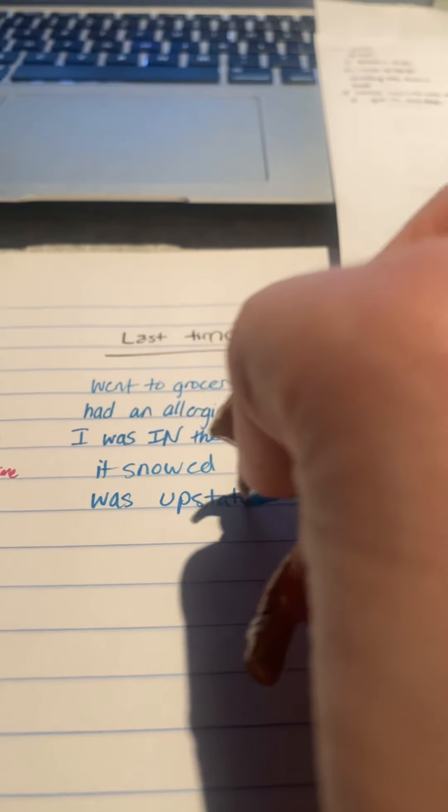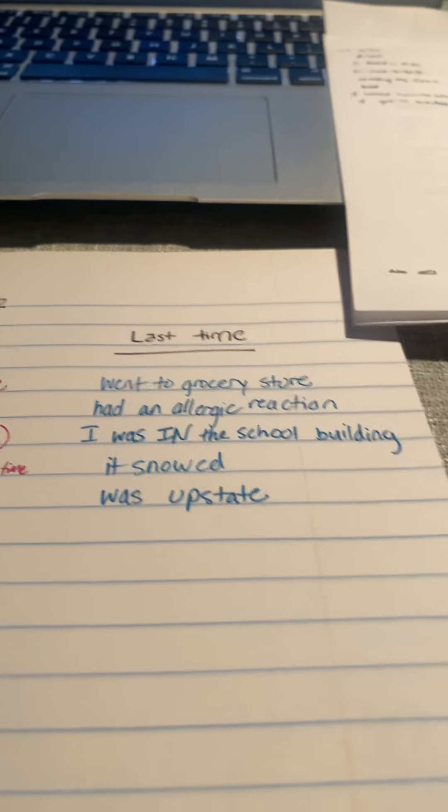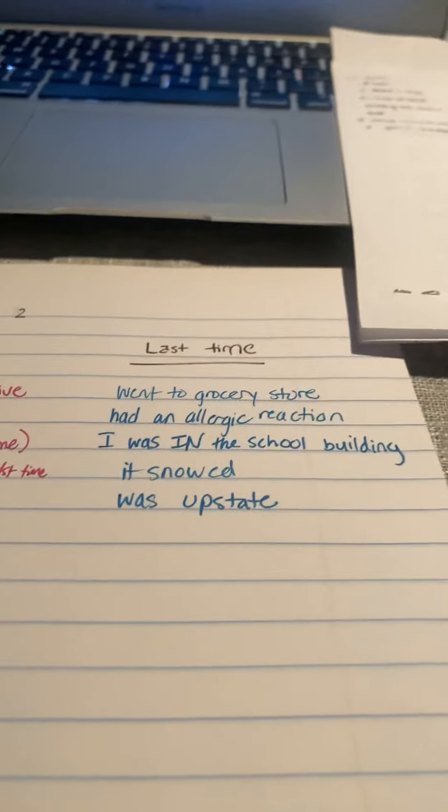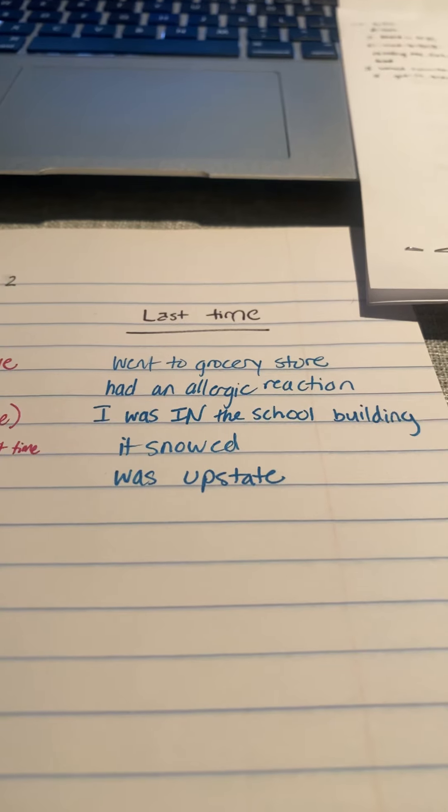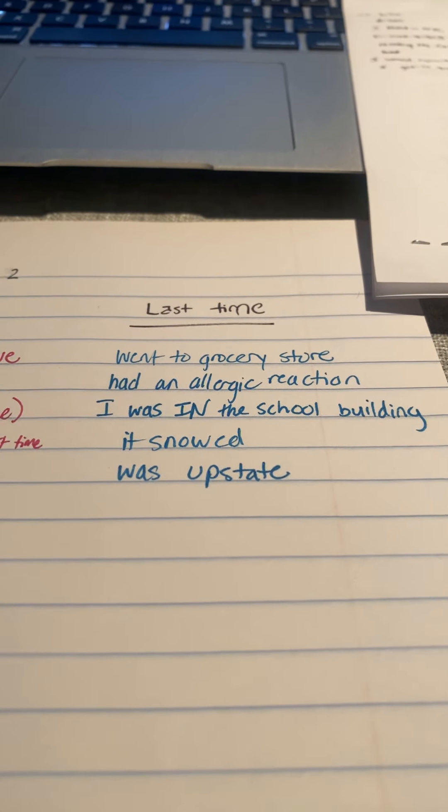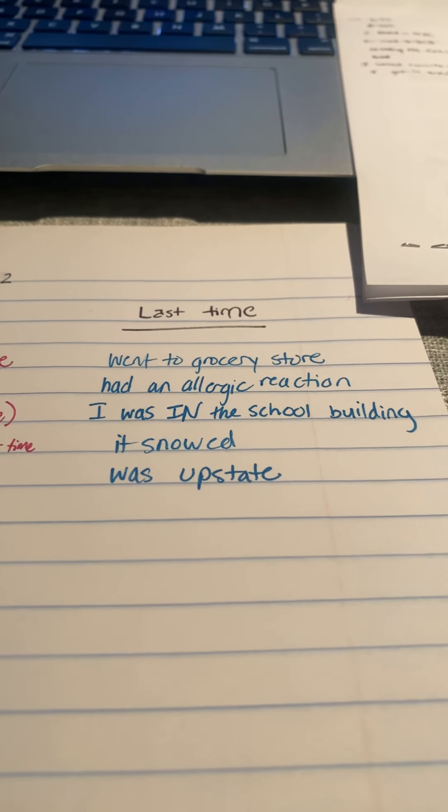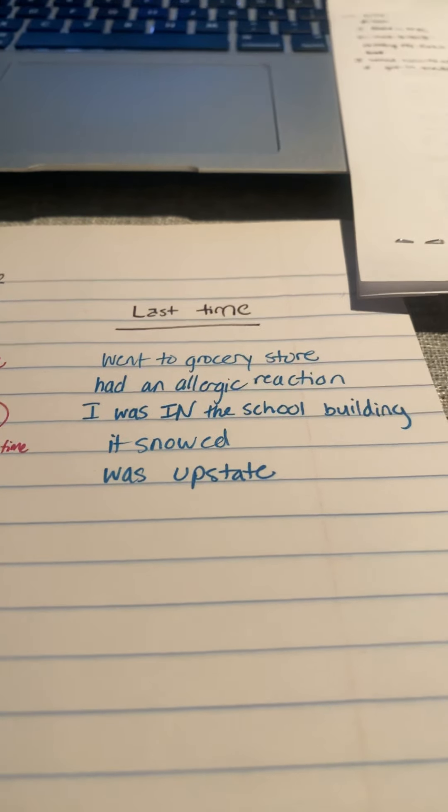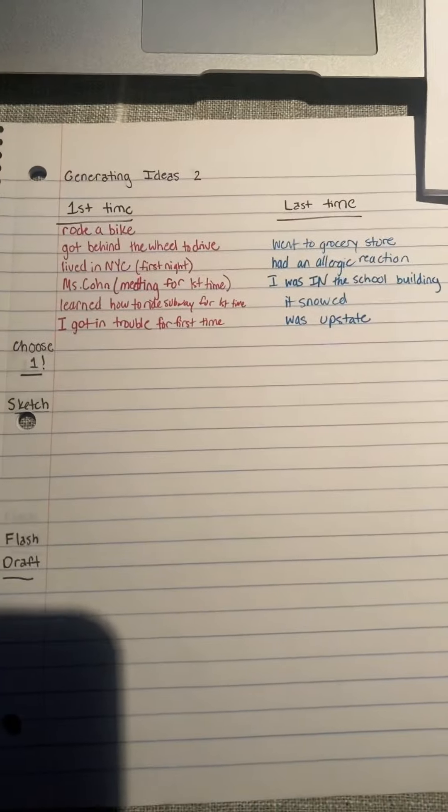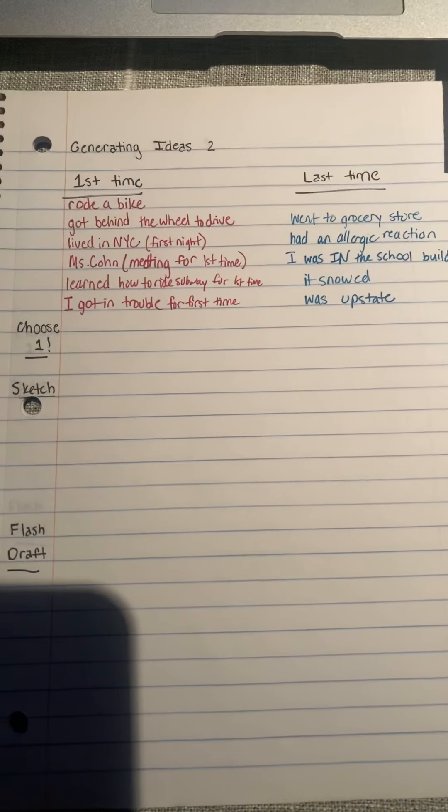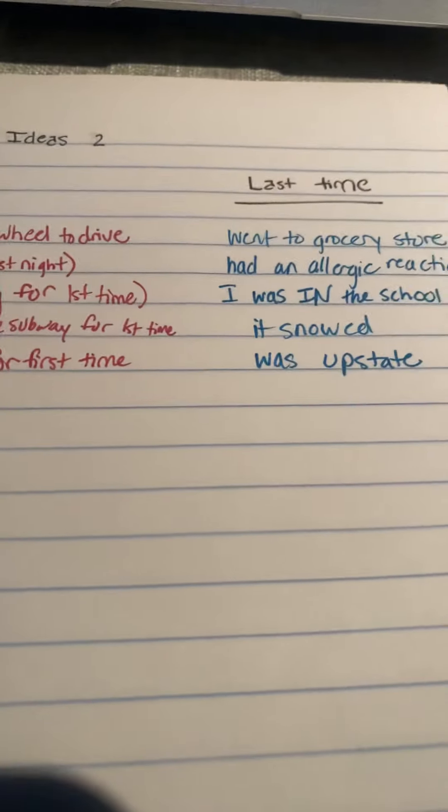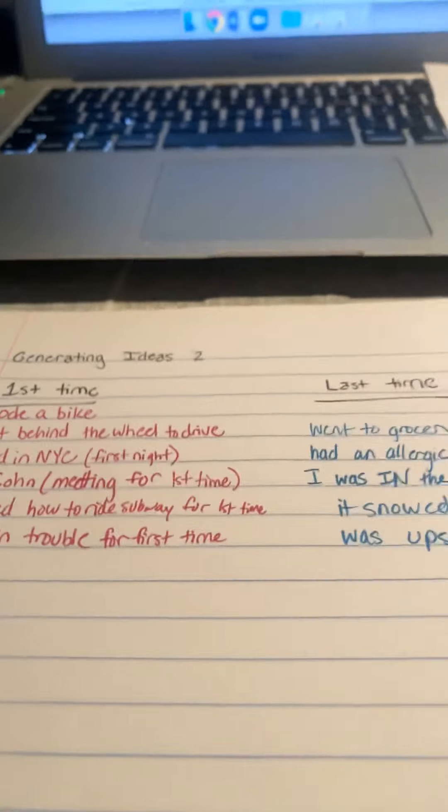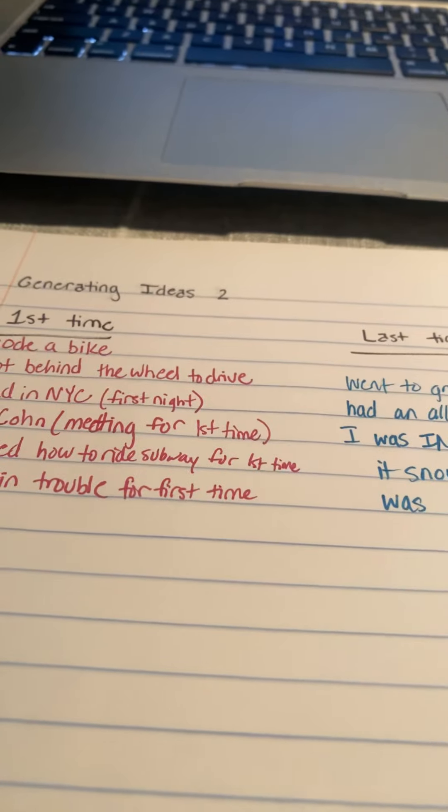Remember, you need to narrow it in on a really small moment. I'm not going to talk about the whole time I was upstate. I could think about a small moment from that time when I was there. Or maybe when I arrived, and I was so excited to get out of the car and see my parents. I hadn't seen them for a while. I've listed the first and last time I've done something. And now I need to choose one, which I want to draft and write about for today. So I think the one I'm going to choose is when I got in trouble for the first time.